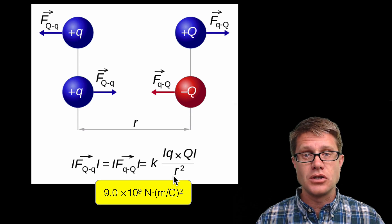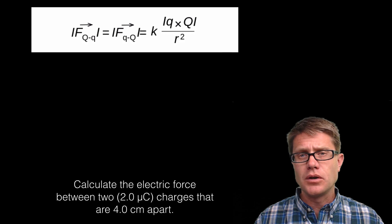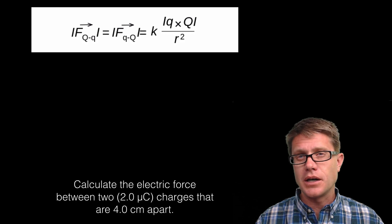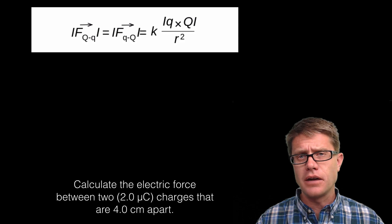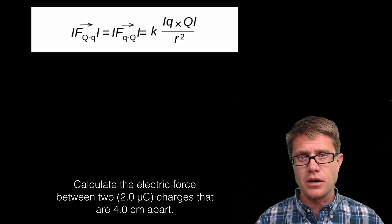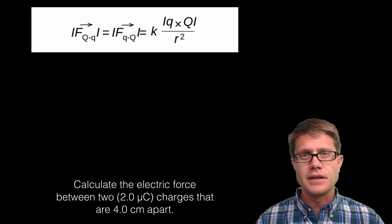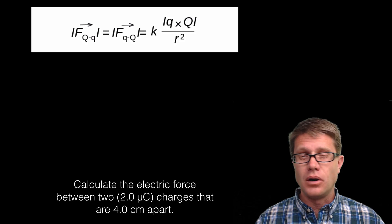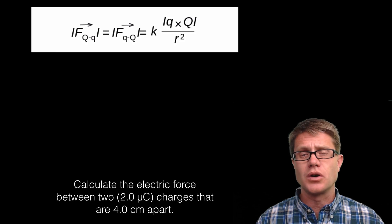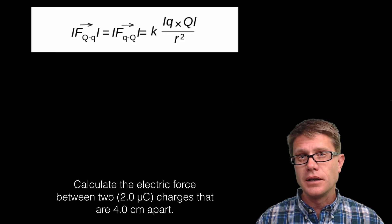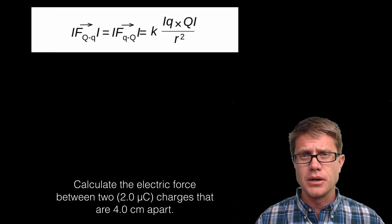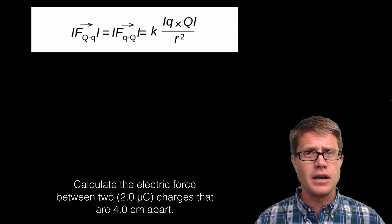Let me give you an example. Let's say we want to calculate the electric force between two charges that each have a 2.0 microcoulomb charge. Micro is 1 times 10 to the negative 6th. You might also see nanocoulombs, which is 1 times 10 to the negative 9th — coulombs are a really large charge. Let's say they are separated by 4.0 centimeters, which you will have to convert to meters.